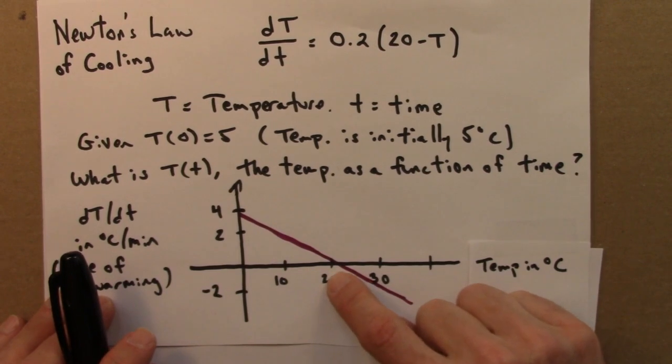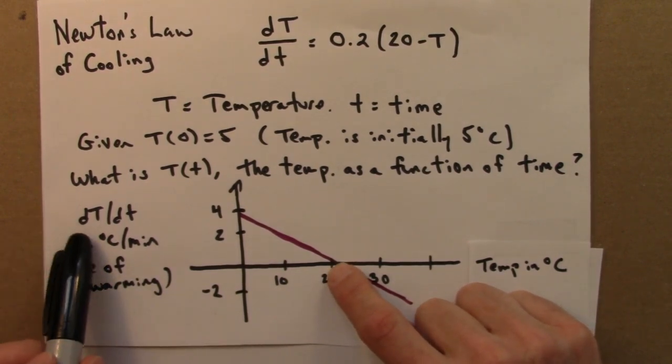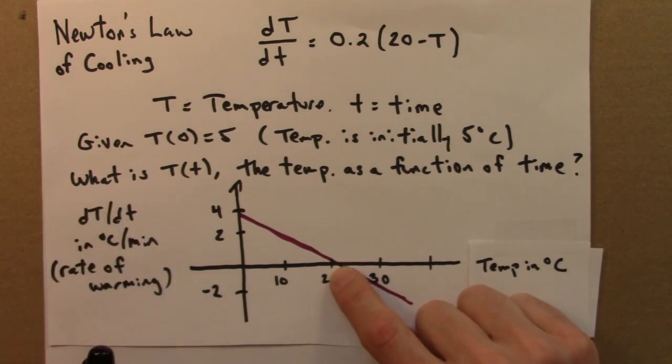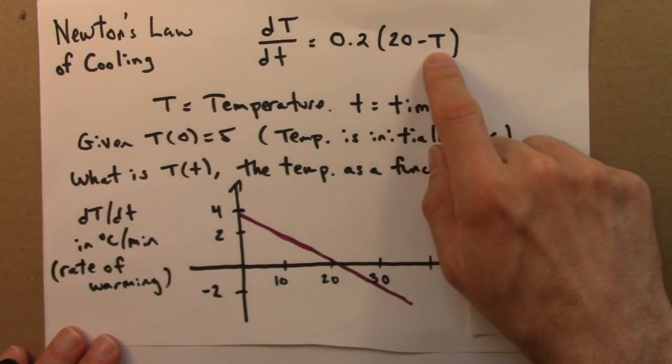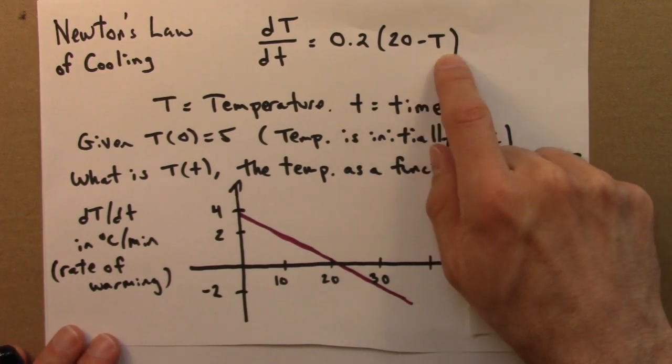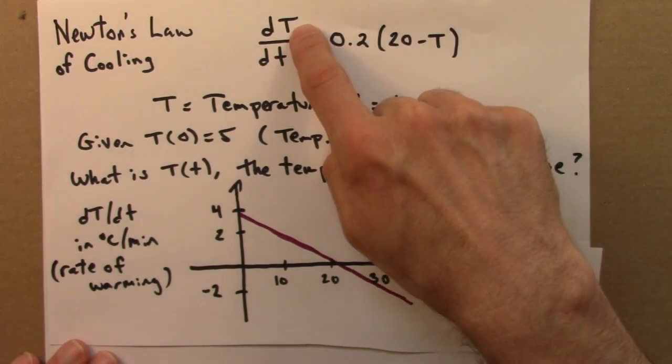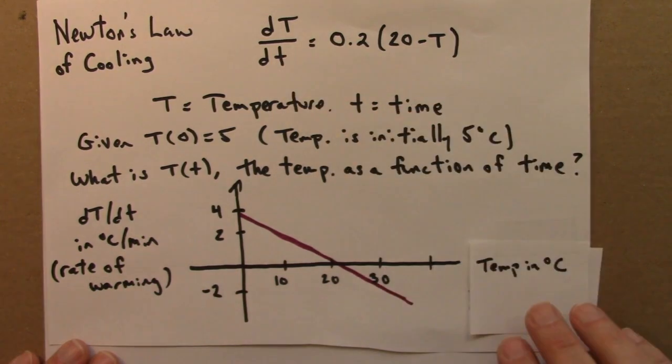If we're at 20 degrees C, then we're not warming up at all. The rate of change of the temperature is 0, because the purple line goes through 0. Or if you plug in 20 here, you get 20 minus 20, that's 0. So, the rate of change, that's the left hand side of this equation, is 0.